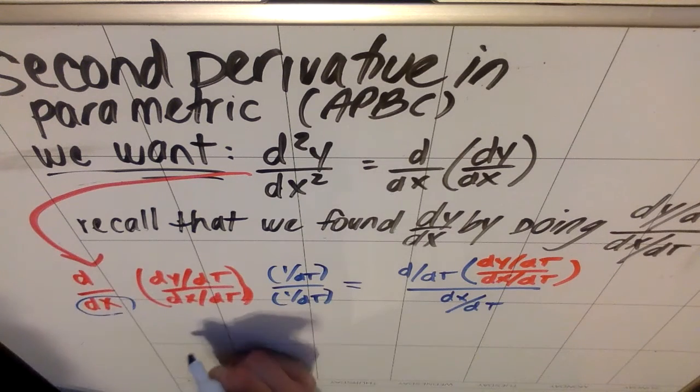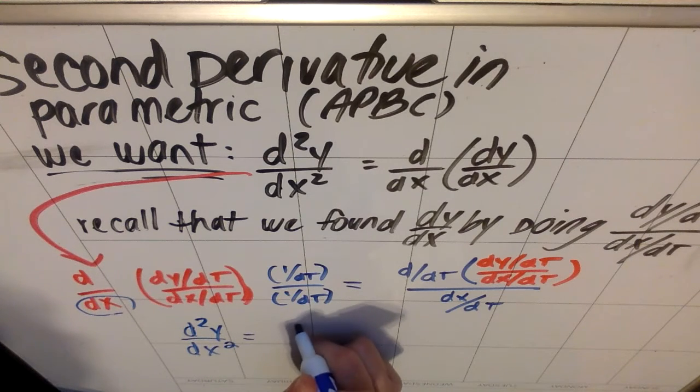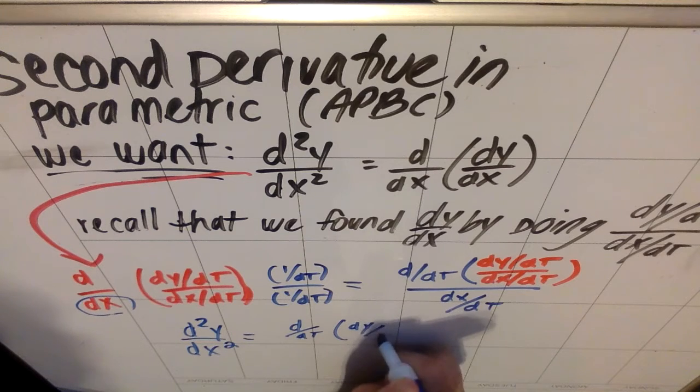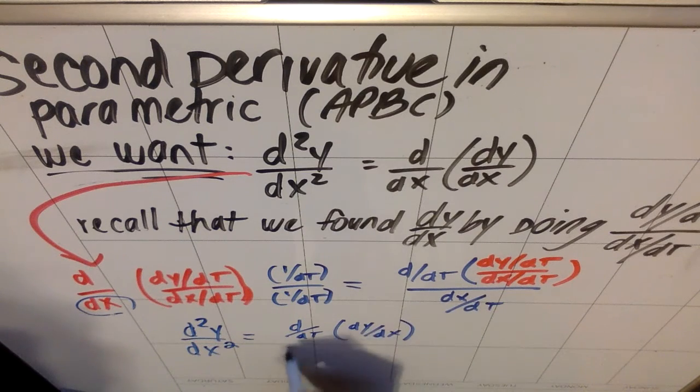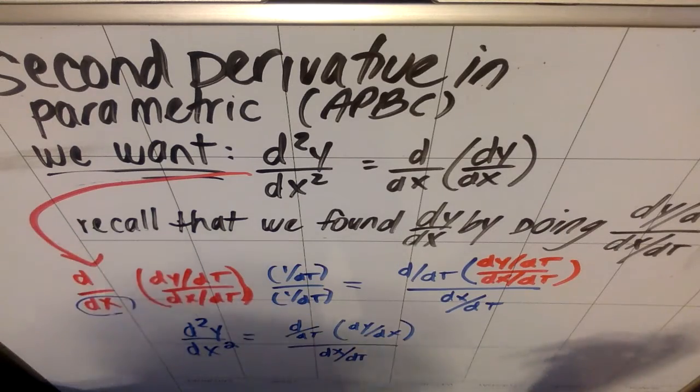So essentially, to find my d squared y dx squared, I'm going to derive with respect to t of whatever my dy dx was. The dy dx that you already found, and then you're going to divide it by your dx dt. And again, another way to write that dx dt is an x prime of t.